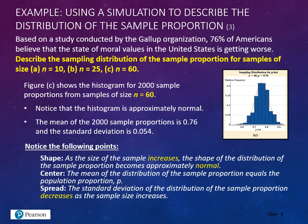From our observations based on sample sizes of 10, 25, and 60: First, regarding shape — as the size of the sample increases, the shape of the distribution of the sample proportion becomes approximately normal, consistent with the central limit theorem from the last section. Second, the center — the mean of the distribution of the sample proportion equals the population proportion in all cases. Third, the standard deviation of the distribution of the sample proportion decreases as the sample size increases.